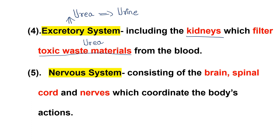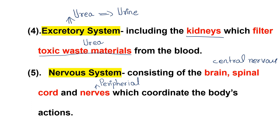The nervous system consists of the brain and spinal cord, which form the central nervous system. It also includes the peripheral nervous system. Together these coordinate body actions.